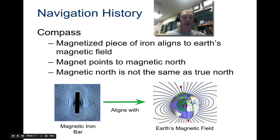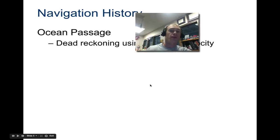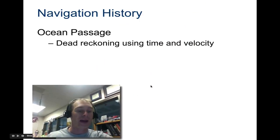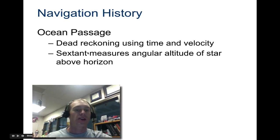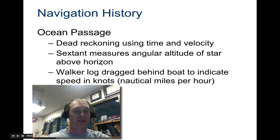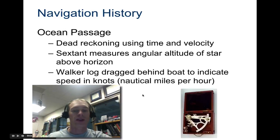For ocean navigation, they used something called dead reckoning, which uses time and velocity. The sextant measures the angular altitude of stars above the horizon, and a walker log was dragged behind the boat to indicate speed. Here's a little picture of a sextant.